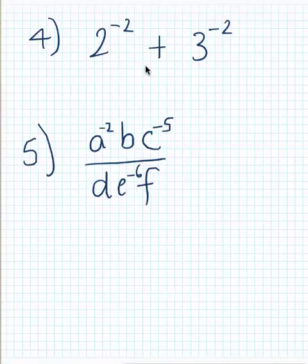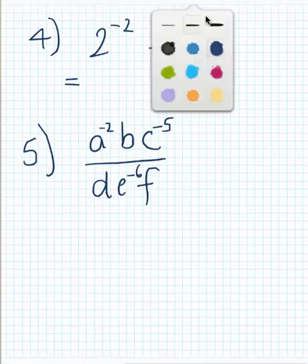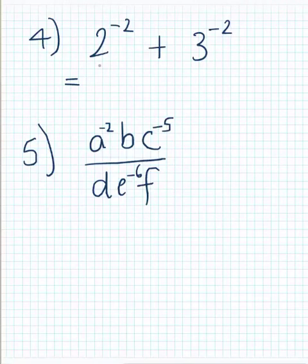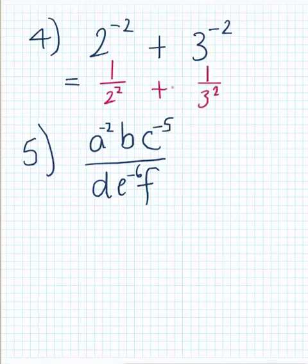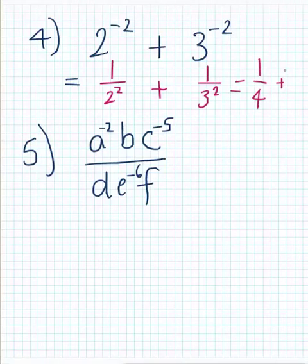Here are two more basic questions. With number 4, whenever you see numbers you can evaluate and get a final answer. I notice 2 to the power of negative 2 and 3 to the power of negative 2 — both go on the bottom, so you end up with a fraction: 1 over 2 squared plus 1 over 3 squared. Evaluate: 2 squared is 4, giving 1/4, and 3 squared is 9, giving 1/9. To add these fractions you need a common denominator — you can work that out or use a calculator.